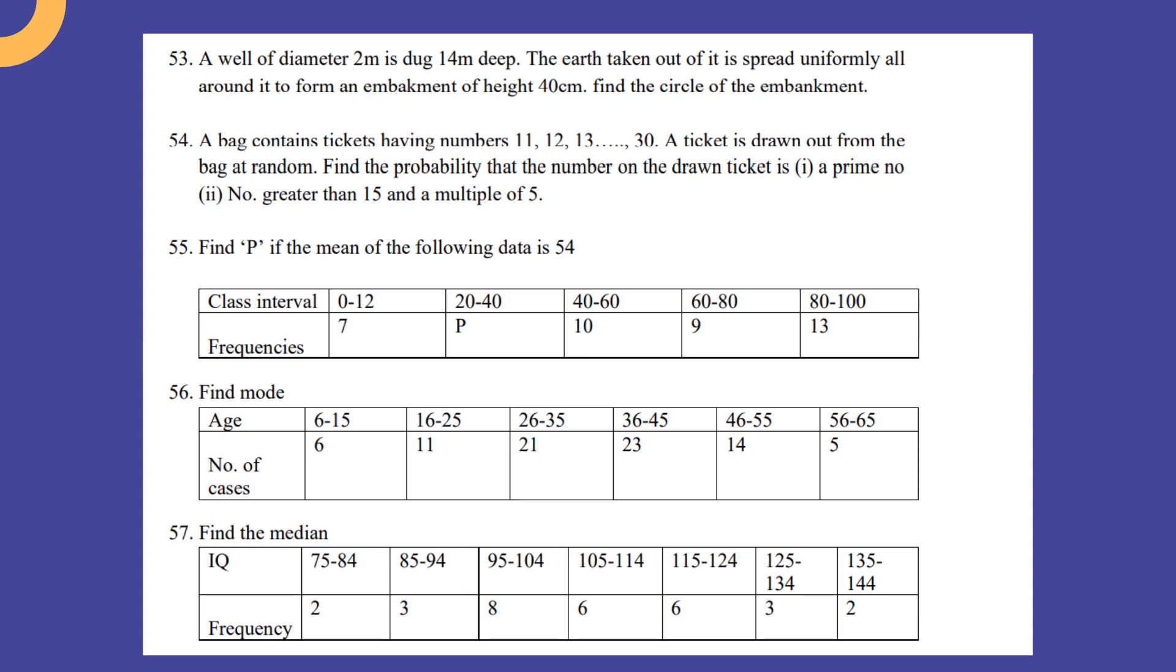A bag contains tickets having numbers 11, 12, 13 up to 30. A ticket is drawn out from the bag at random. Find the probability that the number on the drawn ticket is (1) a prime number and (2) greater than 50 and multiple of 5.